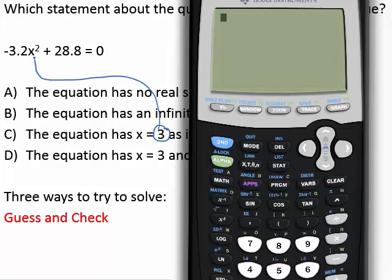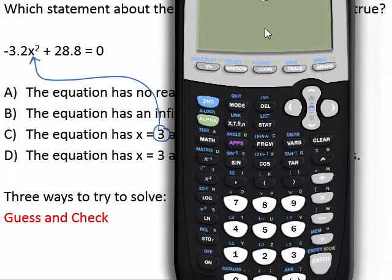We can check c by turning on our calculator. And we're going to substitute the value of 3 in for x. So x is equal to 3 that means everywhere we see an x we're going to put a 3 in parentheses in our calculator instead. So negative 3.2. Quick reminder you're using the negative button instead of the subtraction button.